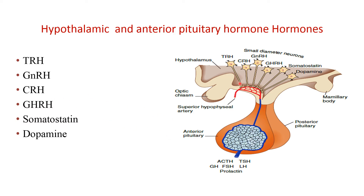If CRH is released from the hypothalamic neurons, it stimulates the release of ACTH, which goes to the adrenal cortex and mainly stimulates the release of glucocorticoids like cortisol. TRH, thyrotropin-releasing hormone, causes stimulation of TSH, which goes to the thyroid gland and stimulates the synthesis and release of thyroid hormones — namely T3 and T4. If GnRH is released, it goes to the somatotropes in the anterior pituitary gland and releases growth hormone. If dopamine is released, it inhibits prolactin secretion. When prolactin is needed, the hypothalamus stops releasing dopamine.